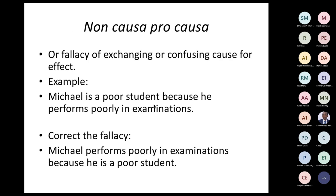Another fallacy is non causa pro causa, or the fallacy of exchanging or confusing cause for effect. For example: Michael is a poor student because he performs poorly in examinations. But that exchanges cause for effect. The correct thing is that Michael performs poorly in examinations because he is a poor student — it is because he is a poor student that he performs poorly, not the other way around.